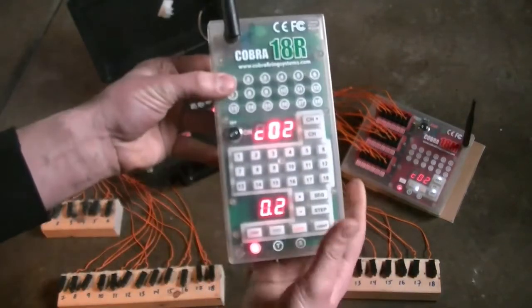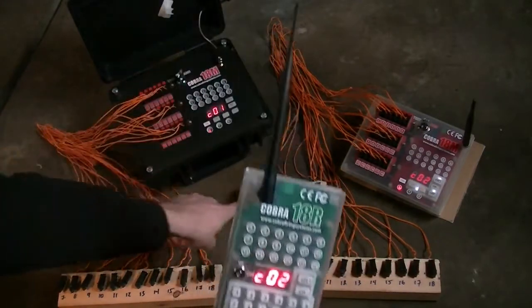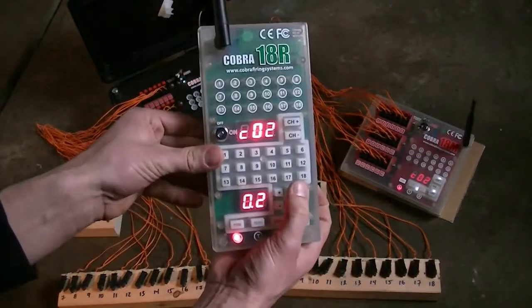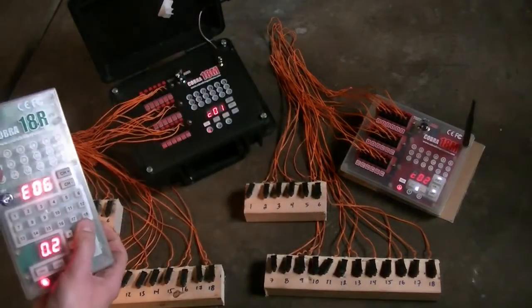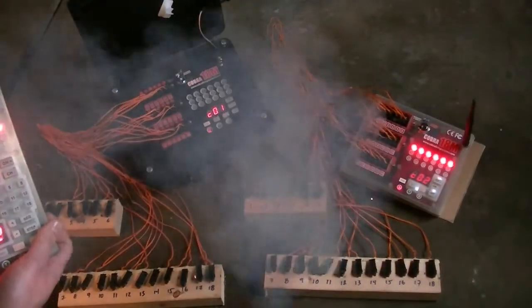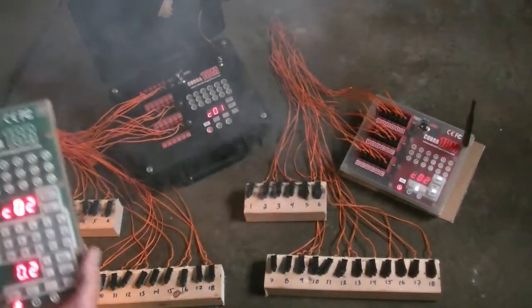Now if I wanted to go to channel 2 and I want to execute that same sequence on this block, I can do so. So I'll just go sequence 1 through 6, and you'll see here everything went.